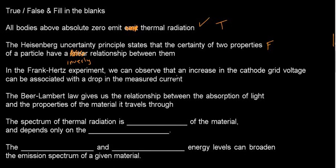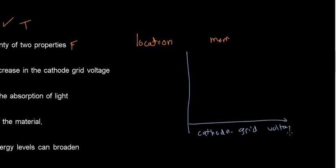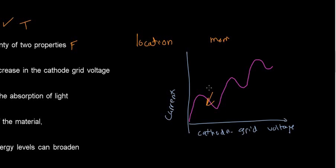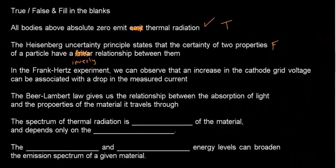In the Frank-Hertz experiment, we can observe that an increase in the cathode grid voltage can be associated with a drop in the measured current. Referring to the graph with cathode grid voltage on one axis and measured current on the other, we always see drops when electrons lose energy interacting with mercury atoms — imparting energy because they have the necessary quantum. So an increase in cathode grid voltage can indeed be associated with a drop in measured current. TRUE.